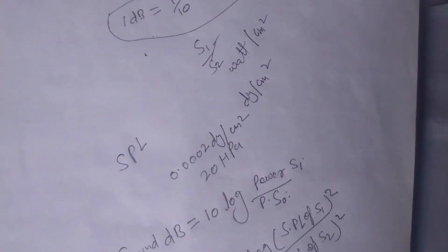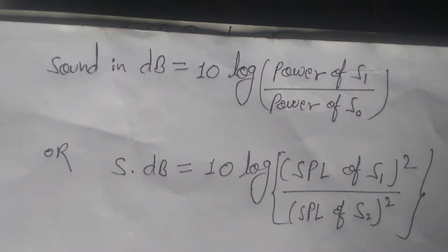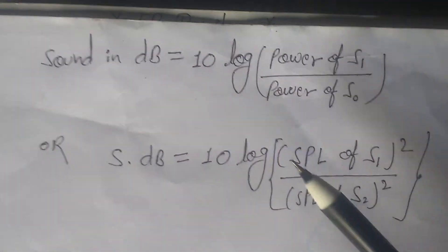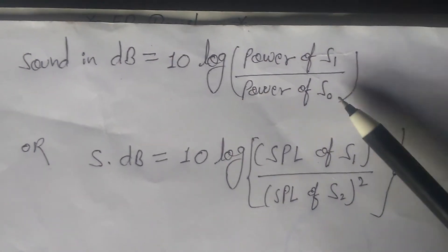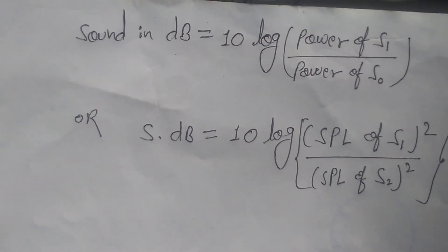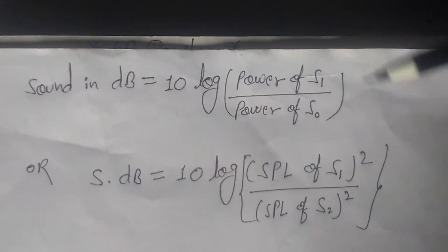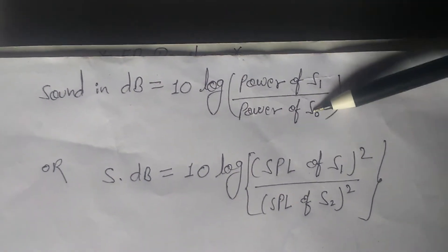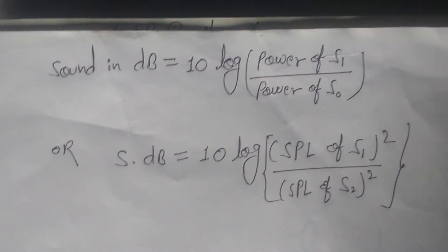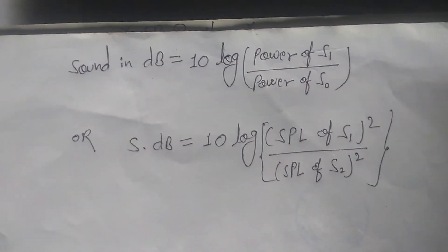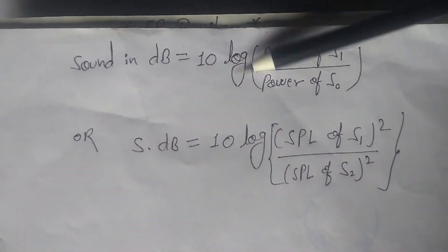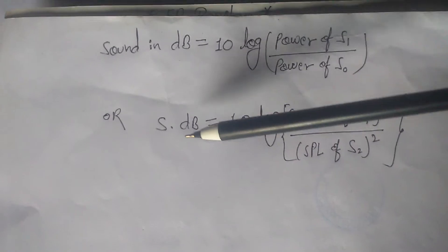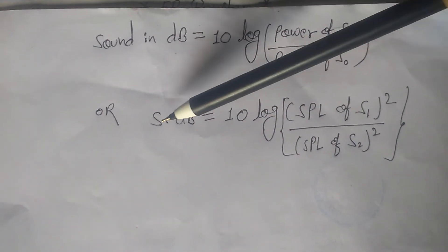Friends, here is the formula for sound in decibel: sound in decibel equals 10 log of power of S1 divided by power of S0. S1 is the sound being described — that means any sound you are measuring is taken as S1. S0 is the reference sound. So the formula is: sound in decibel equals 10 log of power of S1 divided by power of S0.